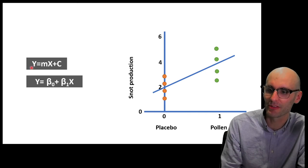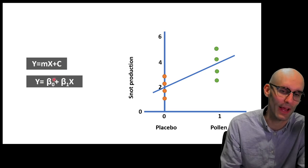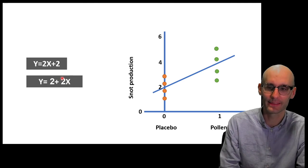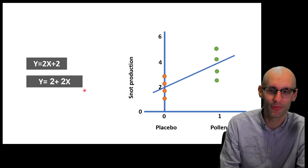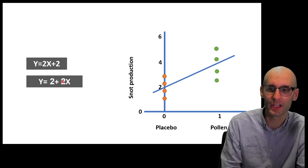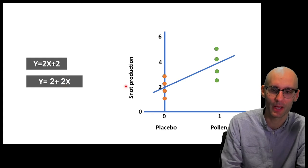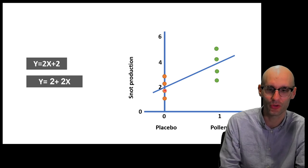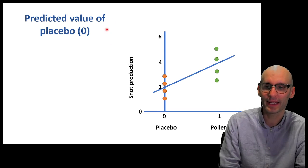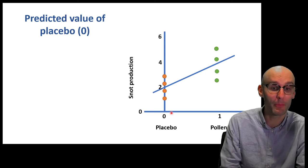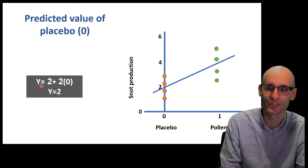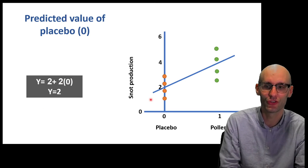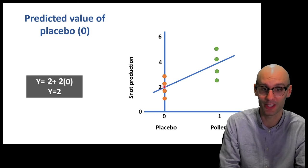Now, the formula of this linear regression, y equals mx plus c, or the way the statisticians write it, y equals beta 0 plus beta 1x. Now, let's plug in some values. This is the actual gradient of the line there is 2. The gradient of the line is 2, so the m has become 2, or the beta 1 has become 2. And the intercept is also 2. We can see it intercepts the line, so the constant there is also 2. So that's 2 there. Now, what is the predictive value of the placebo? Now, remember, we've given the placebo the numerical value of 0. So now we can plug that into our formula. So y equals 2 plus 2 times 0. The predictive value is 2. So if you're in the placebo group, the predictive value is 2.